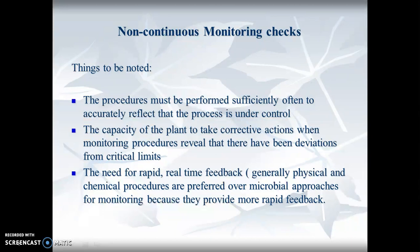Non-continuous monitoring checks can be performed sufficiently often to accurately reflect the process under control. If you've got a freezer and you keep it at zero degrees, you know it's going to take a while to warm up. With non-continuous monitoring, as long as the freezer is at zero when you come in the morning and zero when you go out at night, realistically you know it's going to take greater than 12 hours for it to get up to 28 degrees. You're fine.